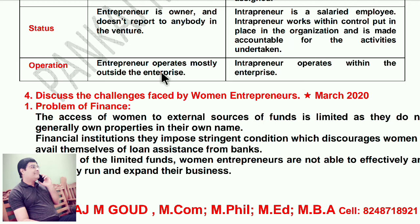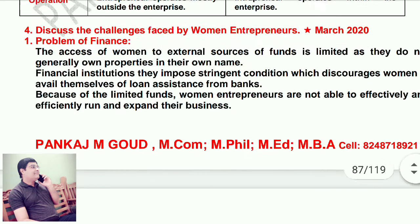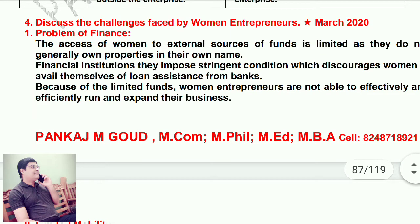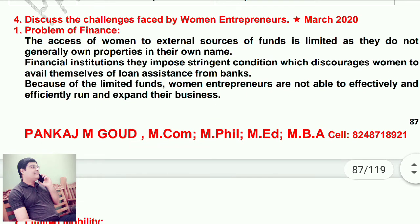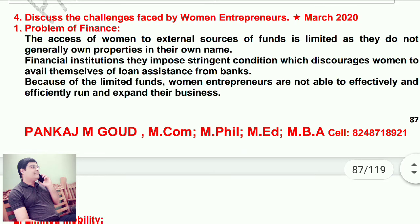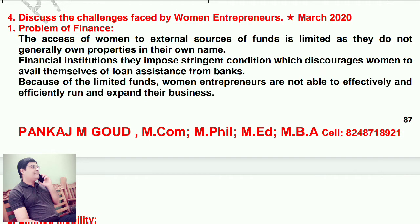Status: entrepreneur is the owner and does not report to anybody in the venture, while intrapreneur is a salaried employee who works within the controls put in place in the organization and is made accountable for activities undertaken. Operation: entrepreneur operates mostly outside the enterprise, while intrapreneur operates within the enterprise.